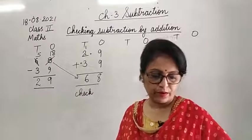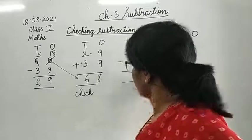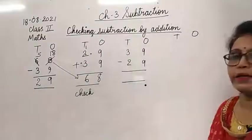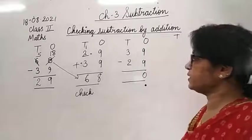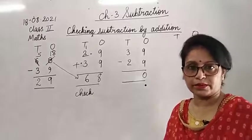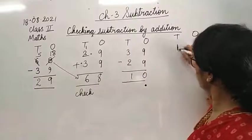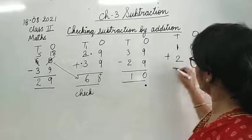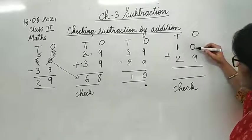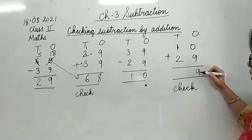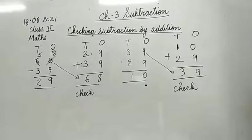Next question: 39 minus 29. 9 minus 9 is 0, and 3 minus 2 is 1. Answer is 10. Now check: 10 plus 29 - 0 plus 9 is 9, and 2 plus 1 is 3. We got 39, which means our subtraction is correct.